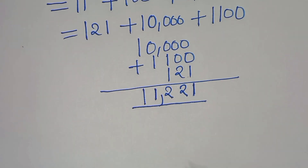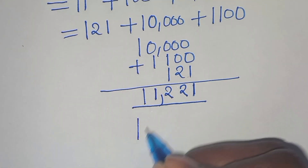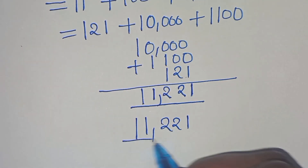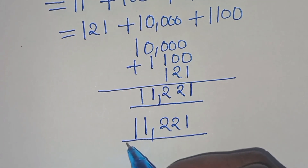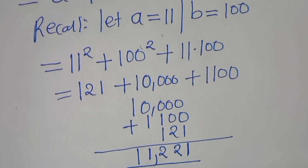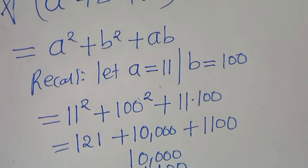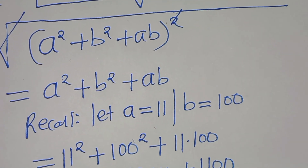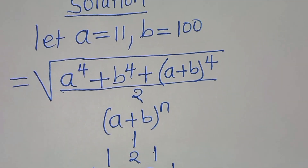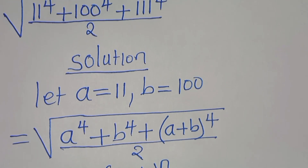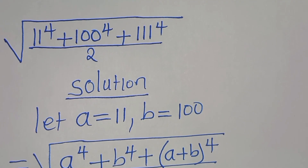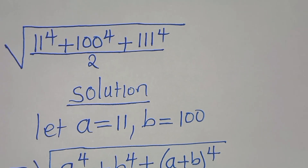And 11,221 is the final solution to this square root math problem. Please like this video and subscribe to this channel so that you can get notified whenever we upload new videos. Thank you for watching.